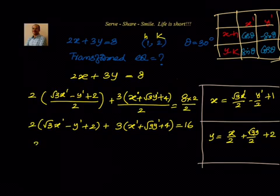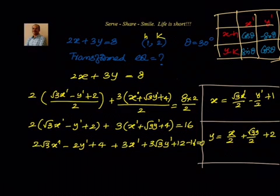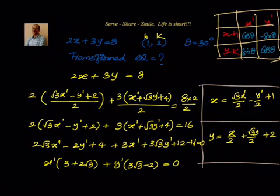So what I will have now in the next step is 2 into (root 3 x dash minus y dash plus 2) plus 3 into (x dash plus root 3 y dash plus 4) equal to 16. Simplifying, we will open the brackets: 2 root 3 x dash minus 2y dash plus 4 plus 3x dash plus 3 root 3 y dash plus 12 minus 16 equal to 0. Now we take x dash as common. I will have (3 plus 2 root 3) plus y dash into (3 root 3 minus 2) equal to 0, because 4 plus 12 is 16, cancelling with 16.